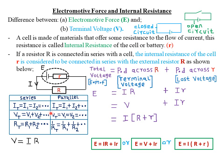Remember this table still applies: for any series connection, I total equals I1 equals I2, V total equals V1 plus V2, and R total is the sum of the resistances. For any parallel connection, I total equals I1 plus I2, V total equals V1 equals V2, and 1 over R total equals 1 over R1 plus 1 over R2. We shall also need Ohm's law, that is voltage equals the product of current and resistance, where the resistance can be the internal resistance or the external resistance.